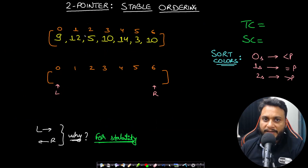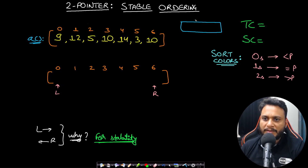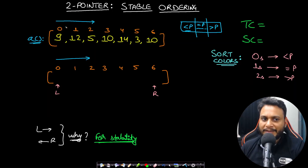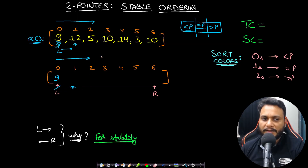Now let's look at the intuition for the optimal solution. I want to divide the result into three parts: the middle portion for elements equal to pivot, the left for elements less than pivot, and the right for elements greater than pivot. To maintain all items less than pivot in left-to-right order (stable sort), we need a left pointer that keeps moving to the right. Whenever we see an item less than the pivot, we place it at the left pointer and increment it.